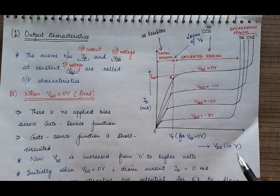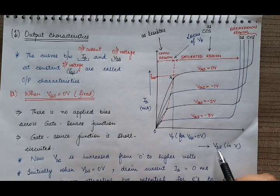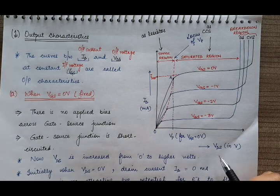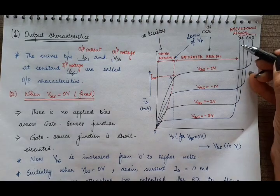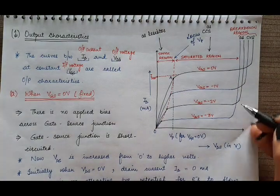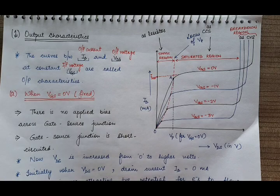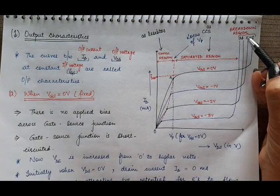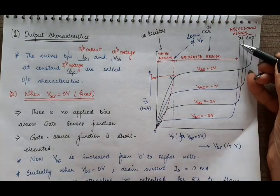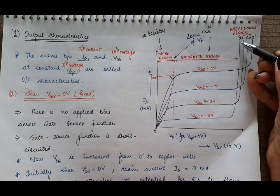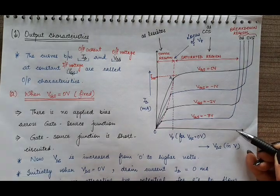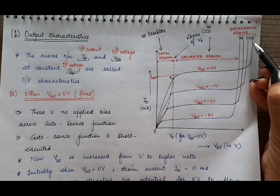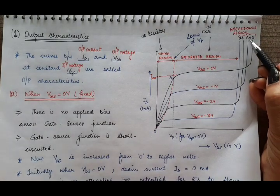When VDS is increased to a very large extent, the device breaks down. Almost at a single voltage, all bonds are broken and a large amount of current flows. This is known as the breakdown region. In the breakdown region, current is increasing while voltage remains constant, so the JFET works as a constant voltage source.